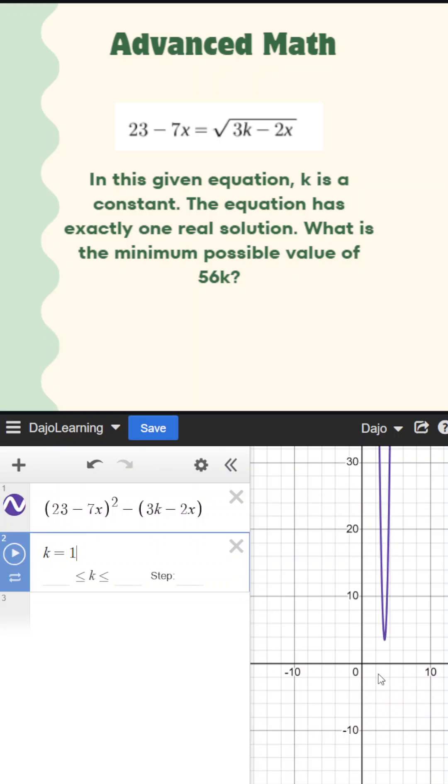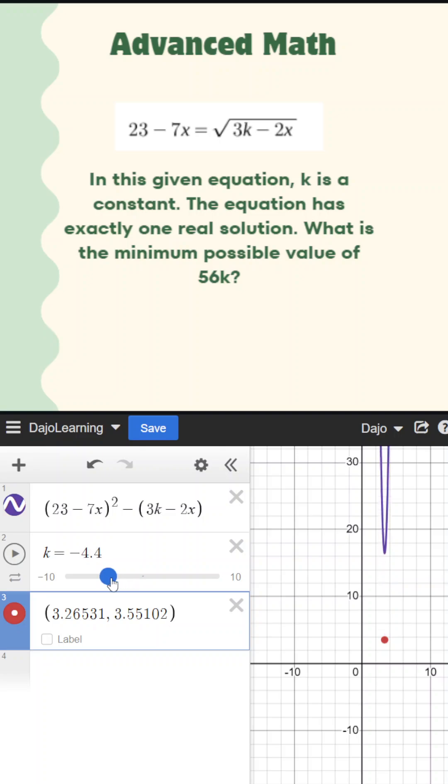And I want you to notice something. If I find the vertex of when k is equal to 1 in this graph, even if I change the value of k, the x value of the vertex is going to be the same. Why? Because k is a constant. The only thing that's changing is our y values.